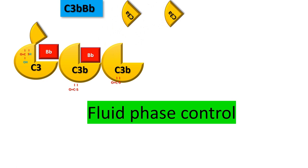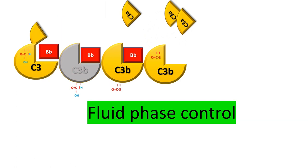C3B binds B-factor, which is cleaved by D-factor, forming the C3BBB, the alternative pathway convertase. C3B exposes the thioester bond, which is active for about 60 milliseconds. If it doesn't find a surface to bind, it is inactivated by hydrolysis. This is the tick-over phase of the alternative pathway.